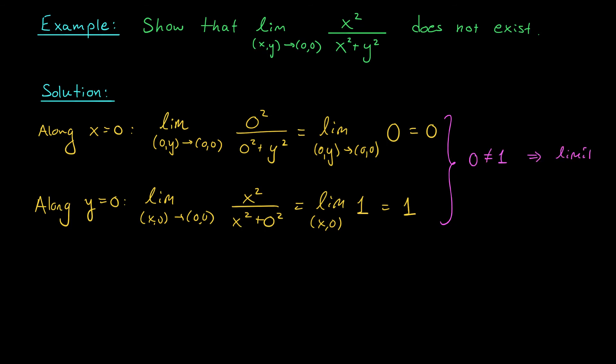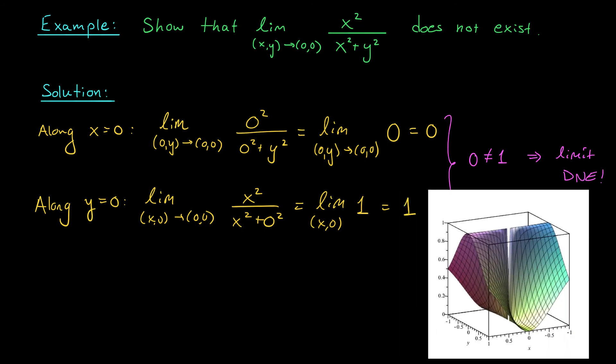Since we're approaching two different values as we head to the origin, we conclude that the limit does not exist. Just like on the last slide, you can see this behavior in the graph of the function. If we approach along the y-axis, we get a value of 0. But if we approach along the x-axis, we get a value of 1.